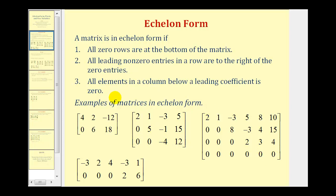And lastly, all elements in a column below a leading coefficient are zero. Here's a leading coefficient — notice below it we have a zero. Here's another leading coefficient — below it we have all zeros. Another way to think of row echelon form is to have a triangle of zeros in the lower left-hand corner. Notice how it's not always a perfect triangle, but that is a nice way to remember row echelon form.